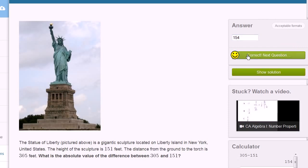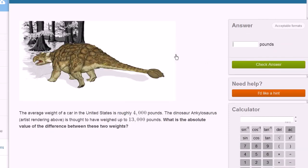Let's do a couple more of these. I like these pictures. The average weight of a car in the United States is roughly 4,000 pounds. The dinosaur Ankylosaurus, artist's rendering above, is thought to have weighed up to 13,000 pounds. What is the absolute value of the difference between these two weights?